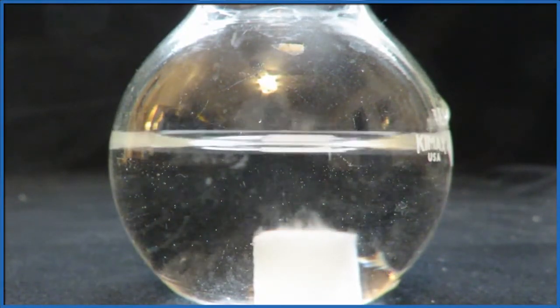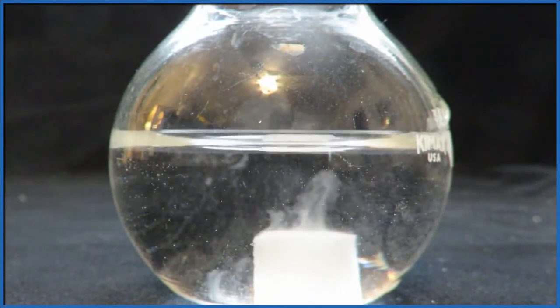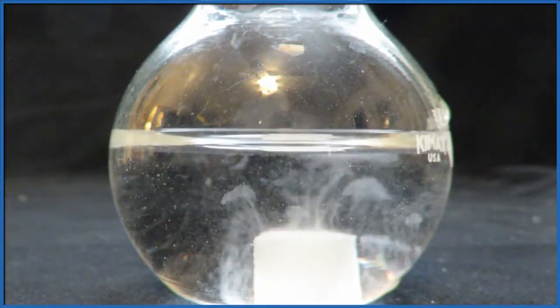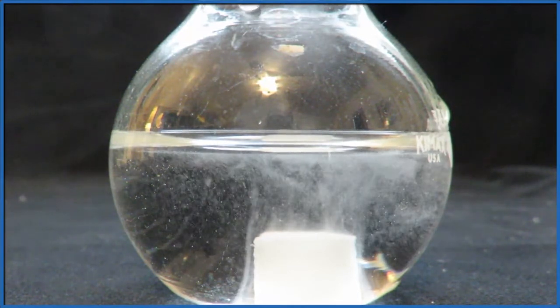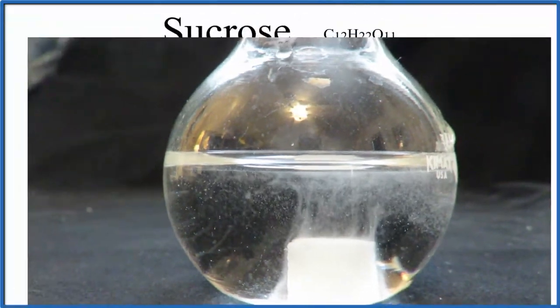You can see the bubbles—that's the air that's trapped within the cube between the pieces of sugar. That starts leaving, that helps it mix, and after a little while, all of the sugar will go away, especially if we stir it up a little bit.